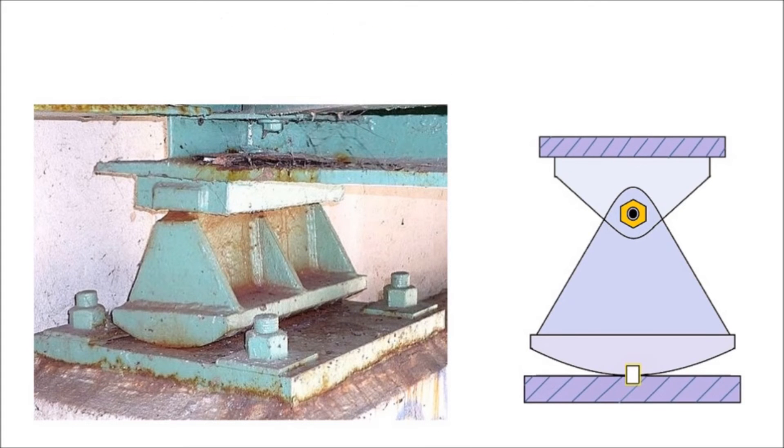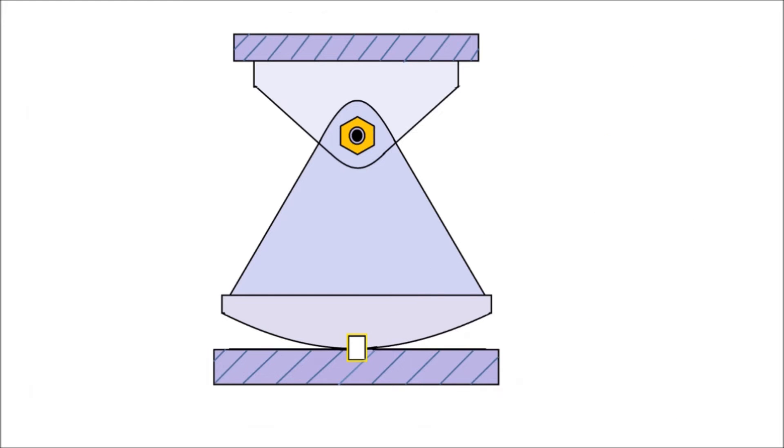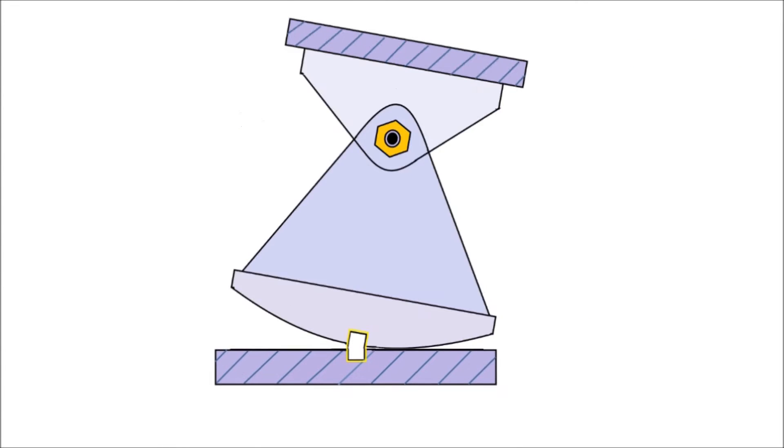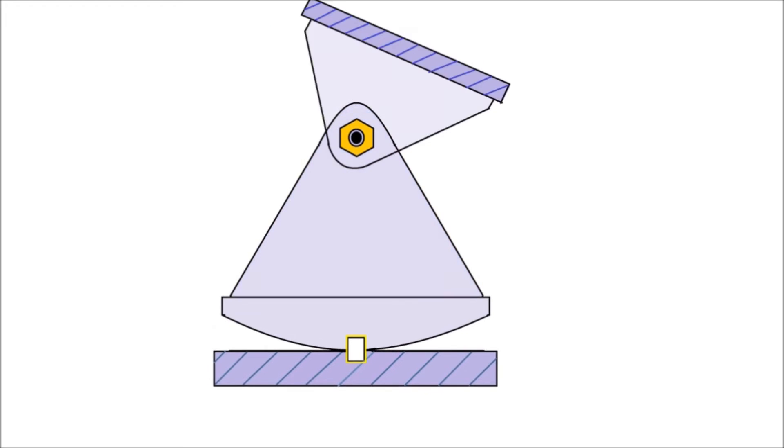Rocker bearings can support high loads. They allow translational movement in longitudinal direction by simply rocking back and forth, and rotational movement in longitudinal direction by the rotation of the pin attached to it.